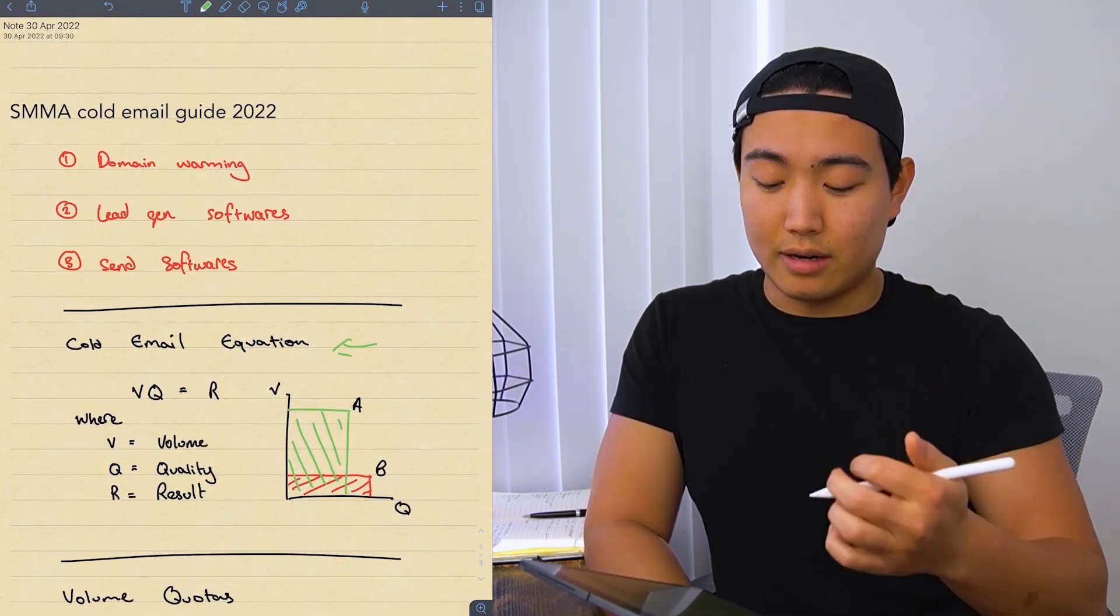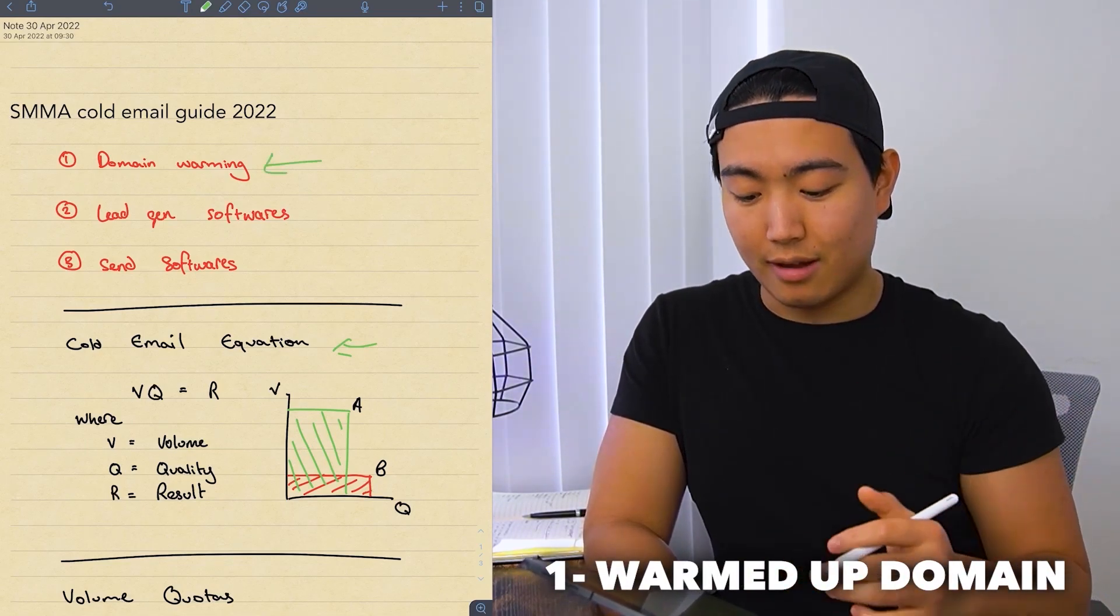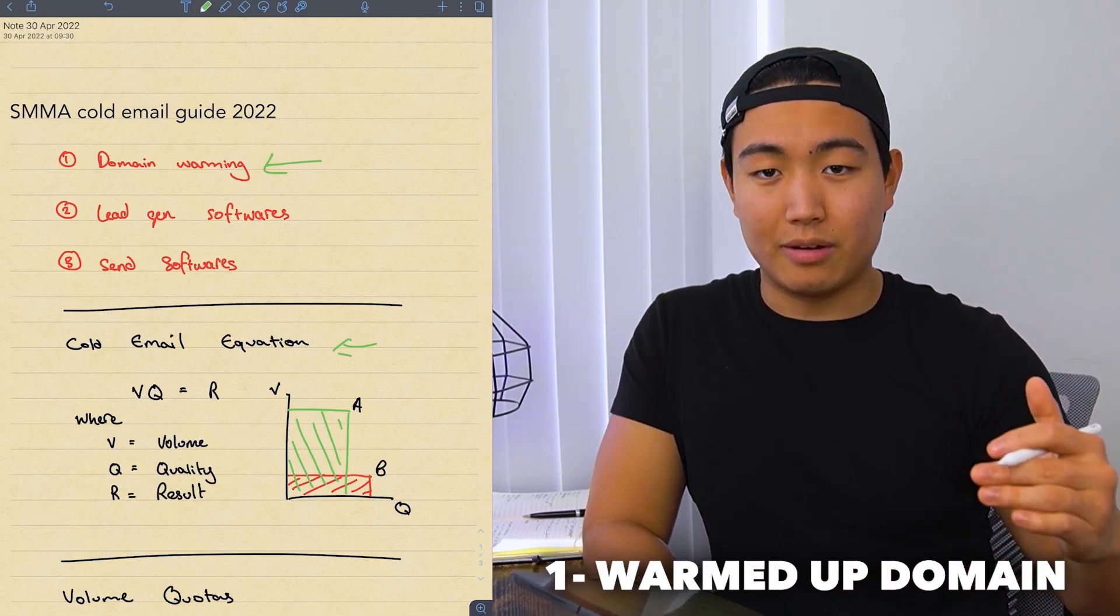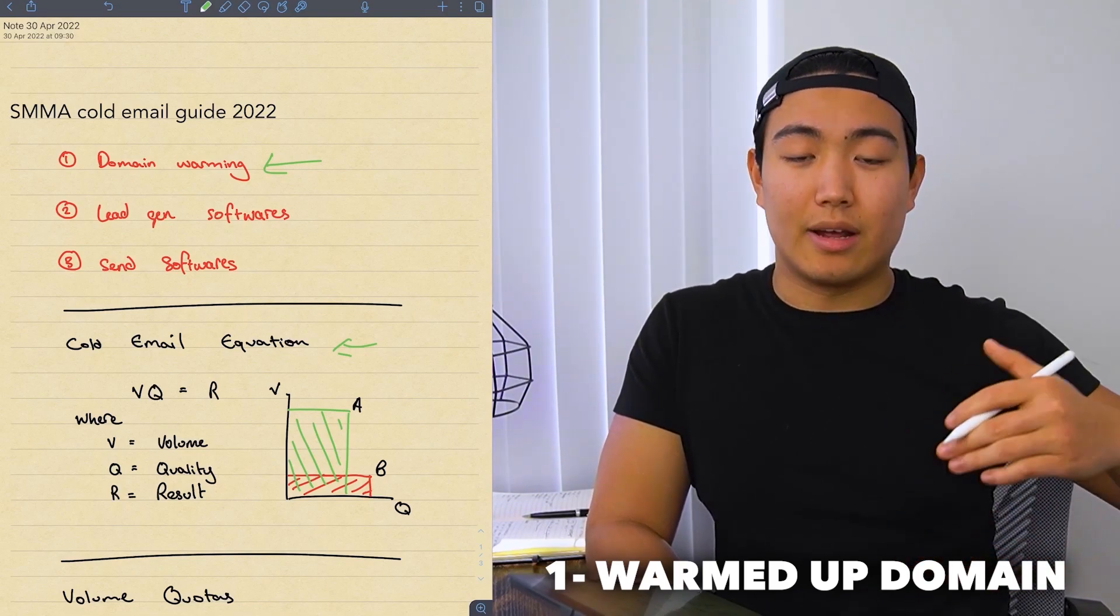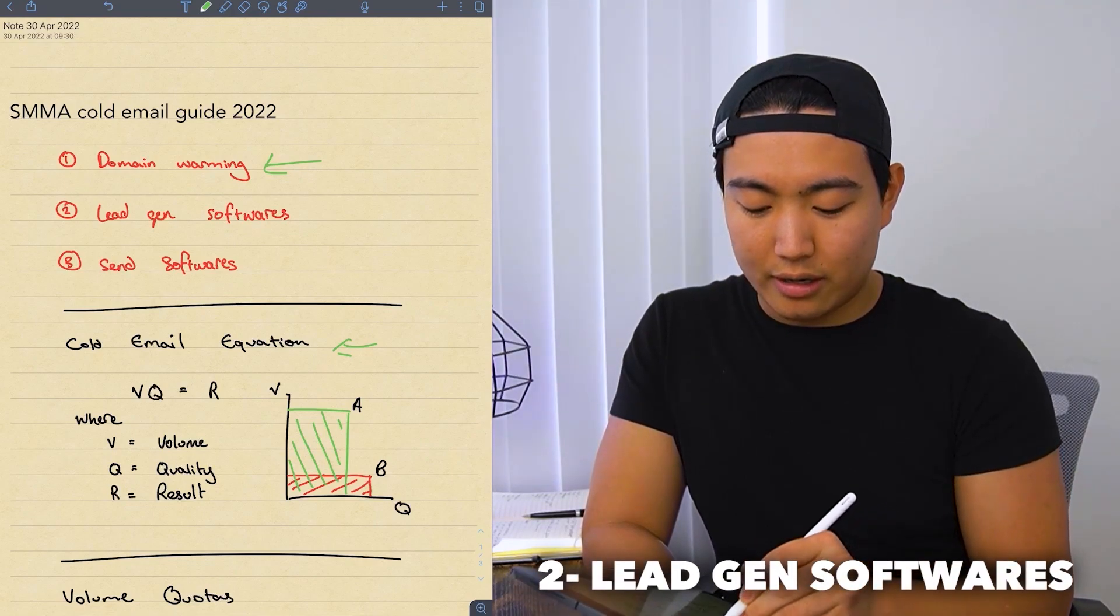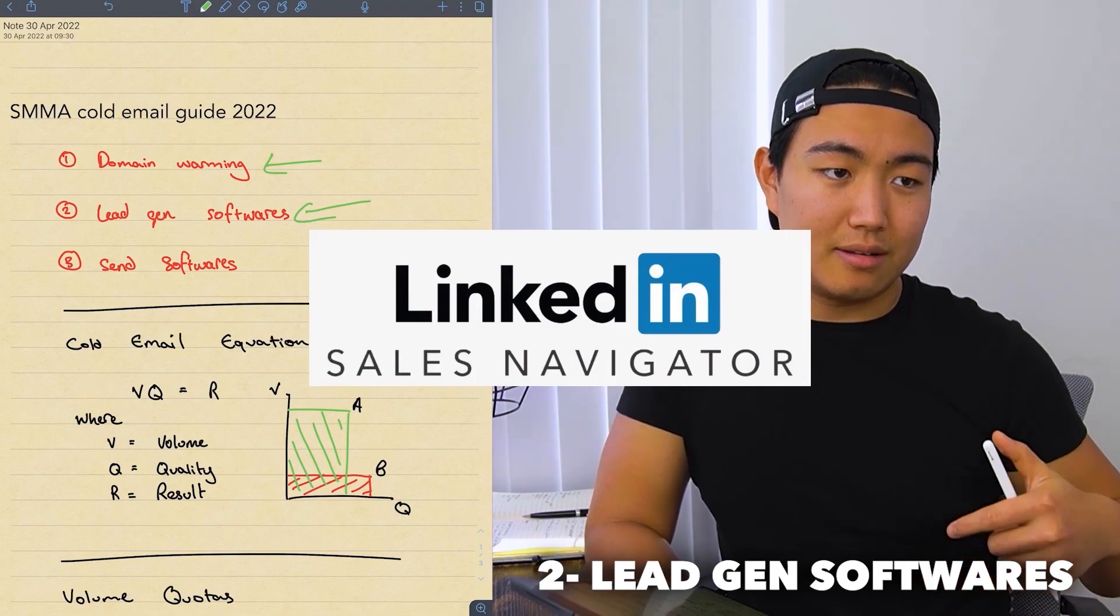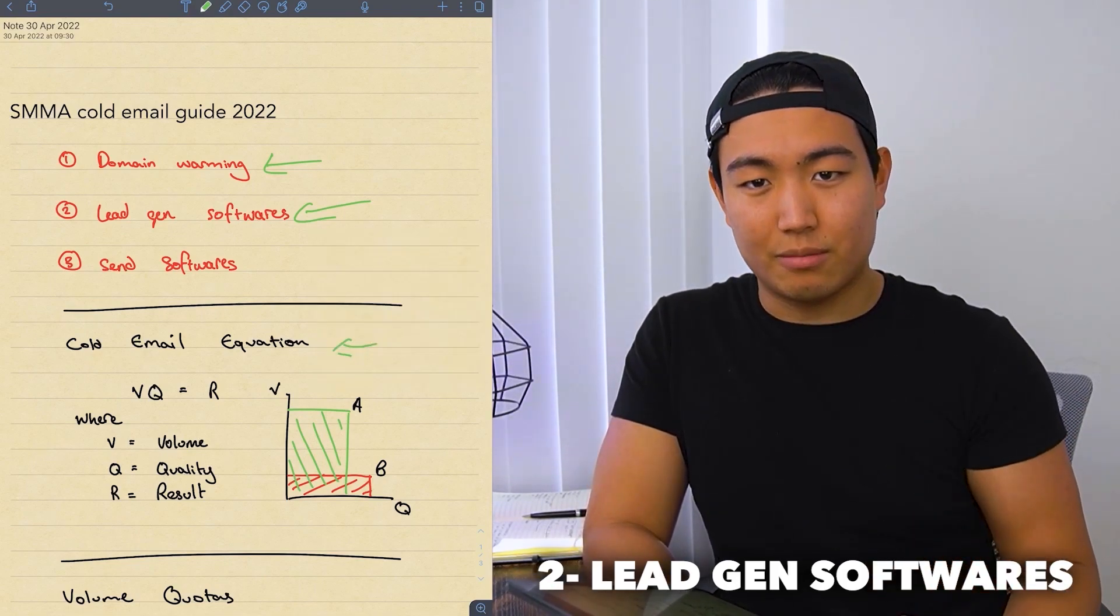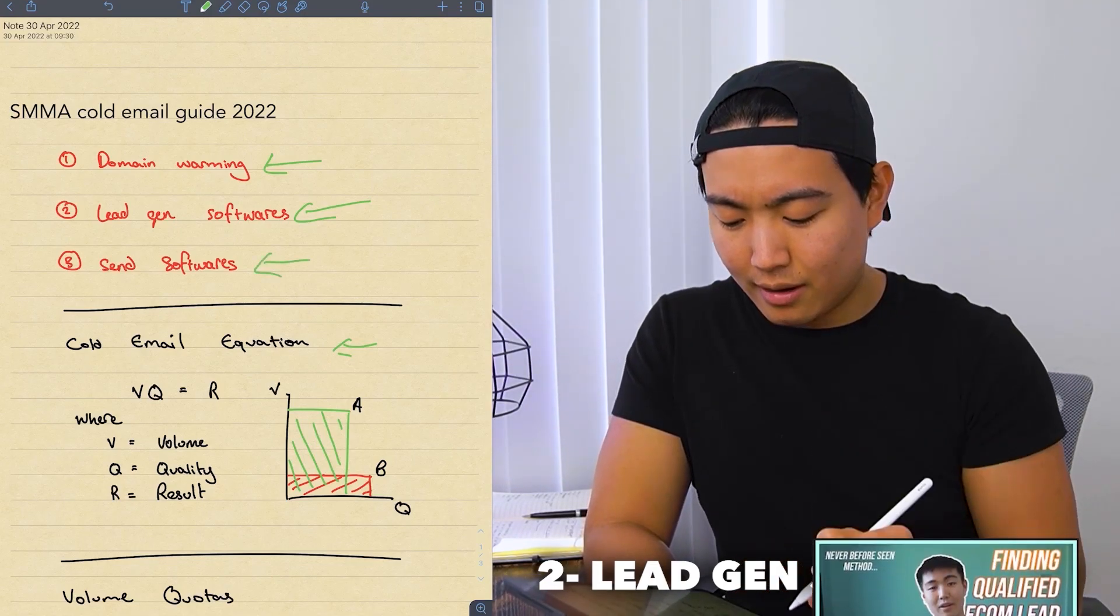There's three things that you're going to need before you start. A warmed up domain or multiple warmed up domains if you want to be safe. This is basically to make sure your sender reputation is already solid before you start sending any outbound emails so that you're not going to land in spam. Next is you're going to need some sort of lead generation software. So that would be things like Snub, LinkedIn Sales Navigator, SalesQL, things along those lines. Basically to find the emails of decision makers. I already have videos on the channel explaining that, so I'm not going to dive into too much detail there.